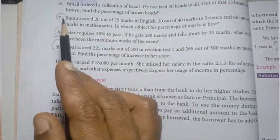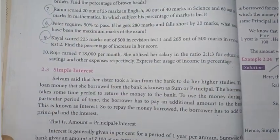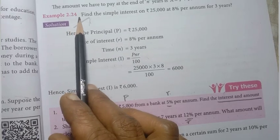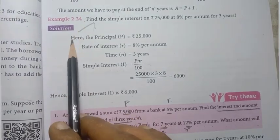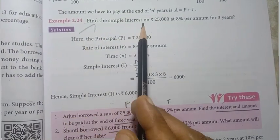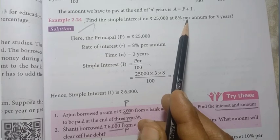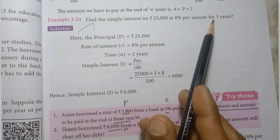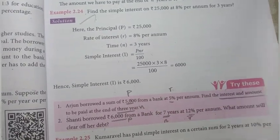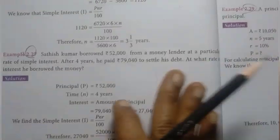Page number 40: questions 7, 8, and 9 are important. Page number 41, example 2.24 — previous year question: find the simple interest on rupees 25,000 at 8% per annum for 3 years — this is a previous year question. Then page number 42, example 2.27, and example 2.28.